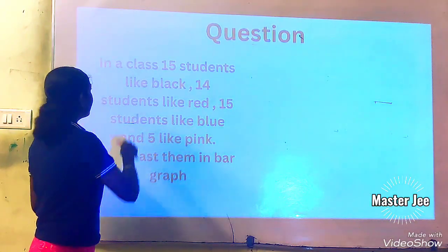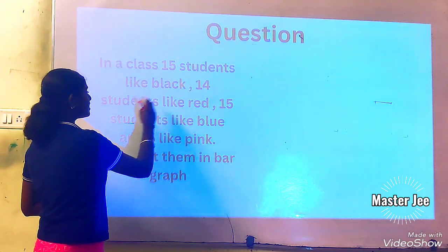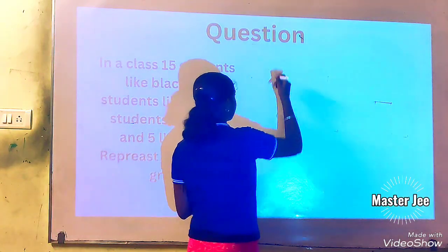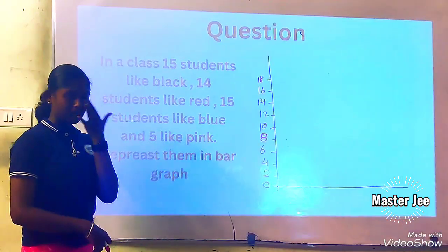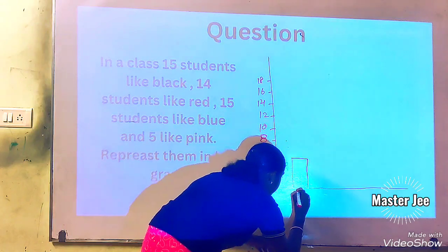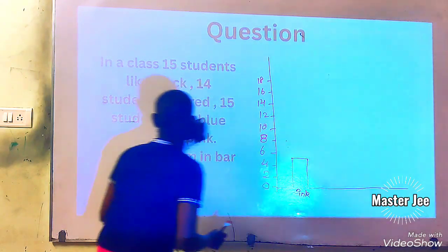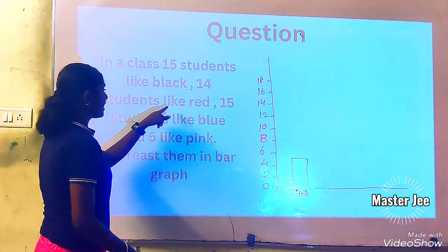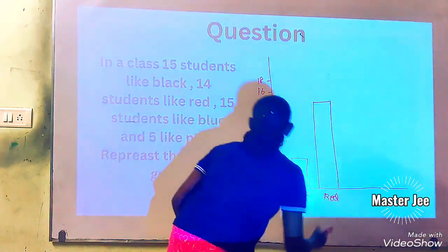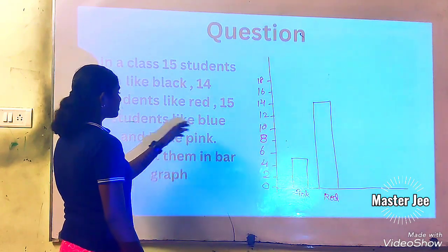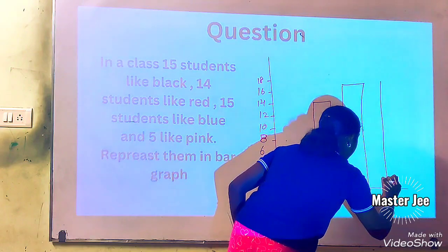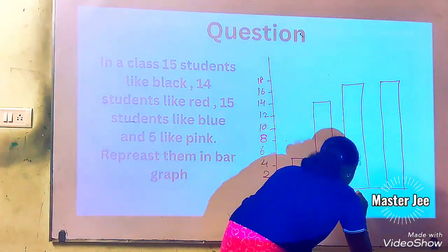A question related to bar graph: In a class, 15 students like black, 14 students like red, 15 students like blue and 5 like pink. Represent them in a bar graph. Now 5 students like pink, so let's draw it first, between 4 and 6. Next we draw for 14 students who like red. Then 15 students like black and 15 students like blue.